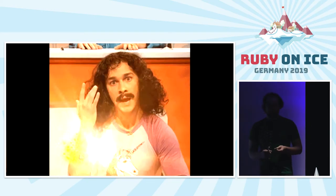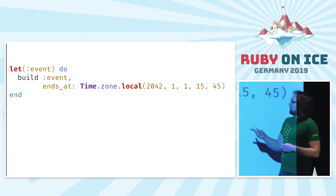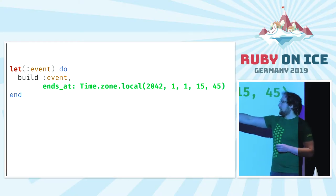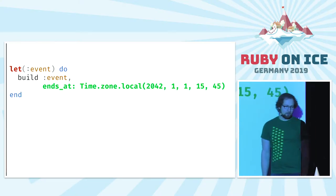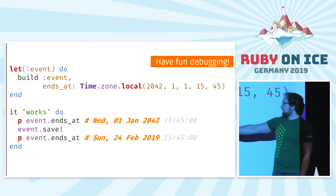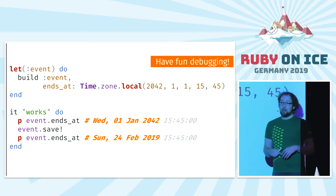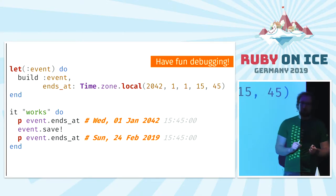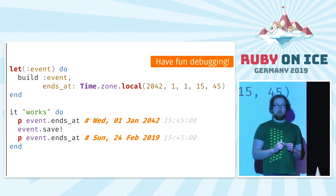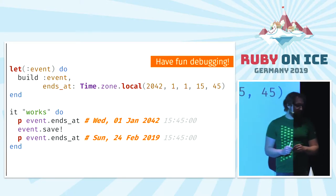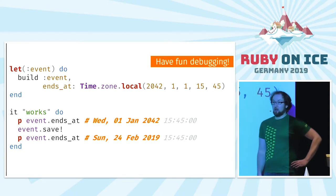But is this really such a good idea? Let's write a test. We want to build a new event — this uses factory_bot. We send the event an end time in the year 2042. We write a test and first look at the end of our event — it's really the 1st of January 2042. After we save it, however, our magic hook triggers and says no — you're not 1st of January 2042, you're in 2019 on the 24th of February, because that's what the date is in the factory.